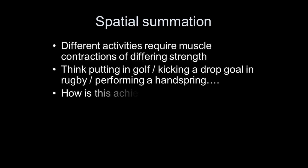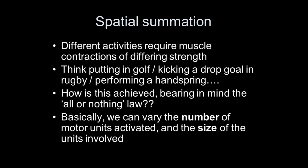That leads us to the idea of spatial summation, which enables you to control the size of the contraction by doing one of two things: either recruiting a different type of motor unit, or by recruiting more motor units. By type, that means using the fast glycolytic type 2b if you want a large contraction, or type 1 if you want a small one. By number, if you want a bigger contraction, you simply use more units.